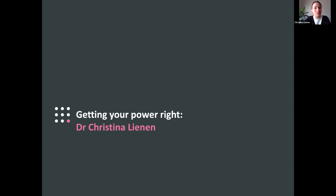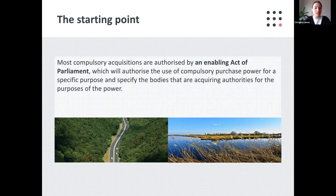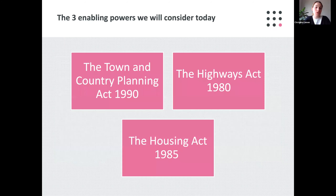That of course begs the question: what are the specific powers that are available and how does one distinguish between them? The starting point is that we find most CPO powers in what we can refer to as enabling acts of parliament. These acts will specify purposes for which compulsory acquisition is available, subject to the relevant tests, and who is authorised to acquire land in such a way. All CPO powers also provide a power to acquire land by agreement, and this is something that requires exploration in every CPO. In the absence of an agreement, a statutory enabling power is required. I will focus on the three most commonly used enabling powers.